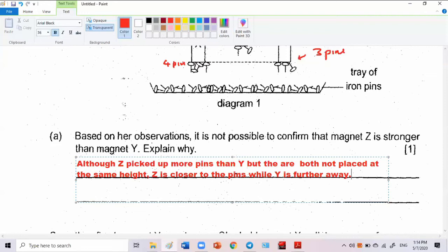Maybe we should say, although Z picked up more pins than Y, they are both not placed at the same height. Z is closer to the pins. Y is further away. Can you see or not? Learn to write better English. I saw Z got more pins, but it is not stronger because they are not at the same height. Better answer?